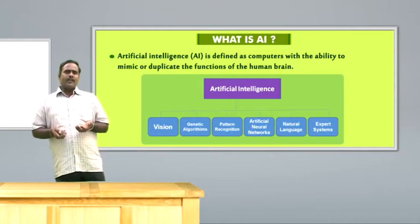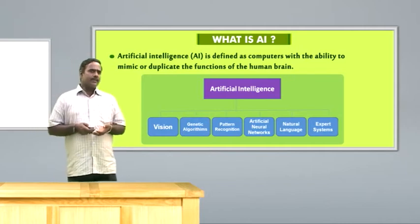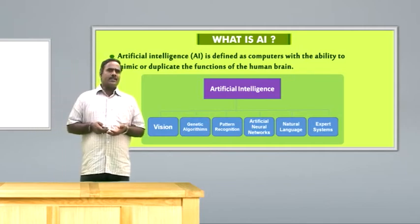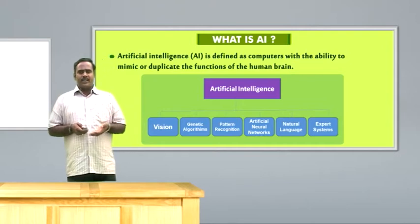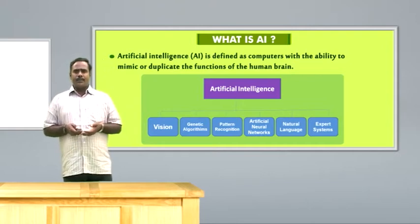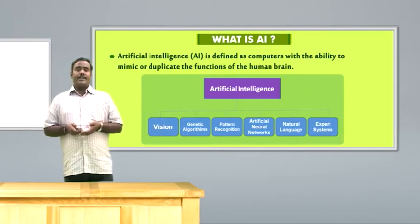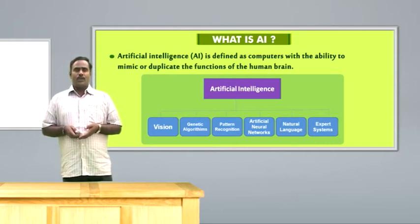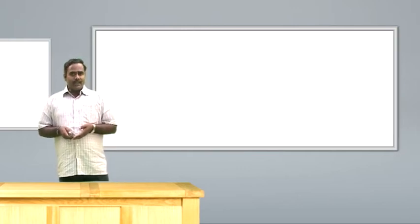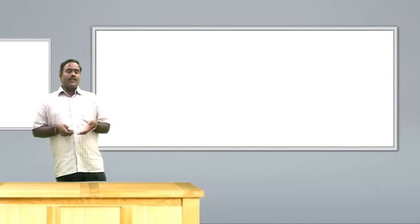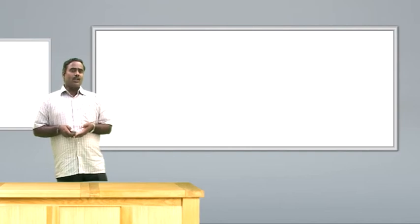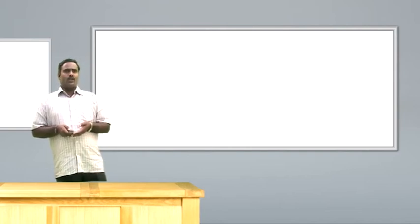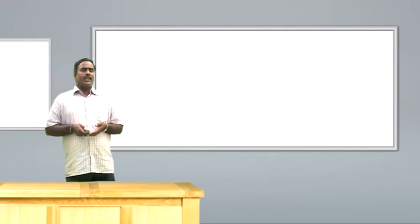Normally AI is having broad areas. Under artificial intelligence there are vision, algorithms, recognitions, artificial neural networks, natural languages, speech, and expert system. Expert system is coming under artificial intelligence. Artificial intelligence is a broad area under which the expert system is one of the components.